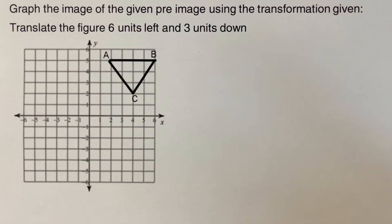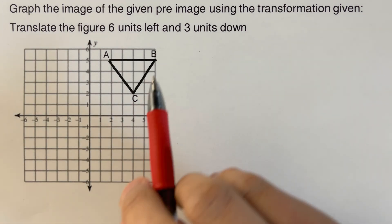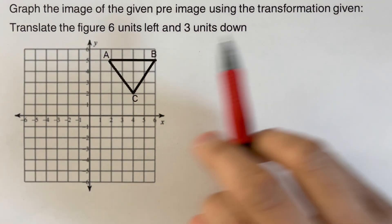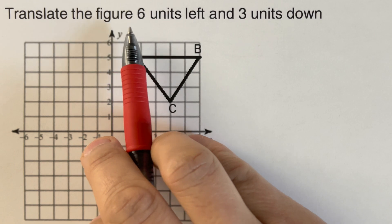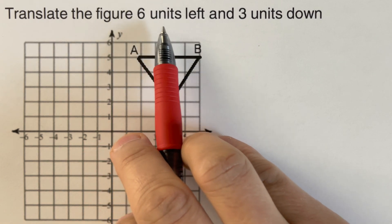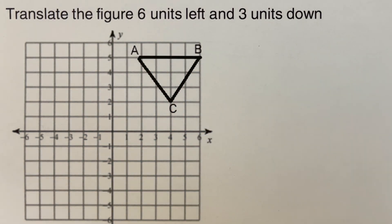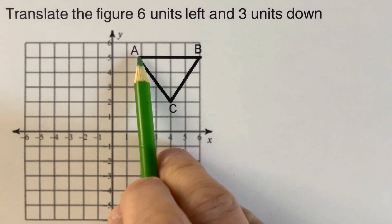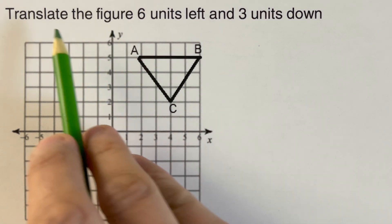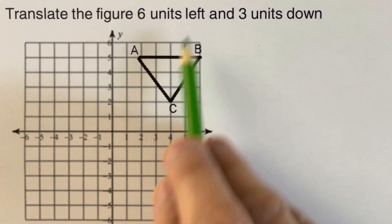Okay, so we go over the problem here. Graph the image of the given pre-image using the transformation given. Translate the figure six units left and three units down. You don't have to cut a piece of triangle and move it across left, right, up, or down. We can also just move each of these vertices given the translation that we have here.